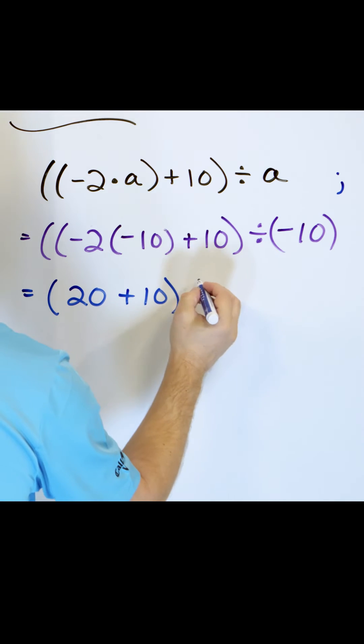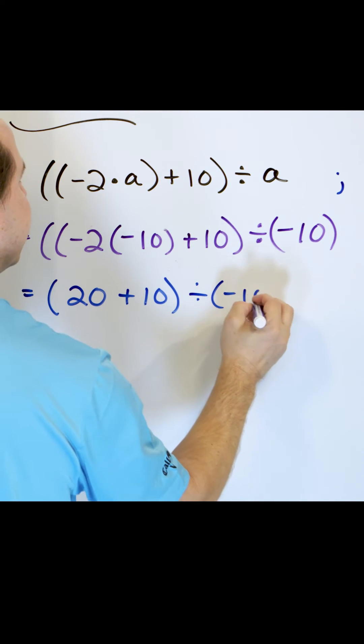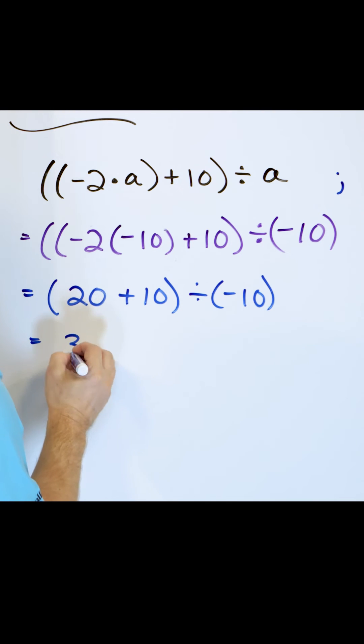We still have this plus 10 here, so we have 20 plus 10, which is 30, and divide by negative 10.